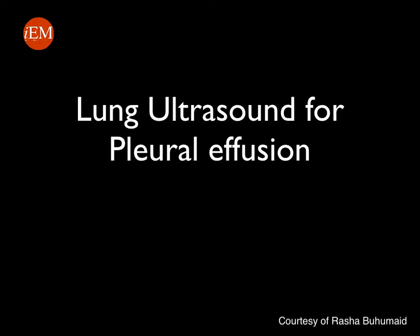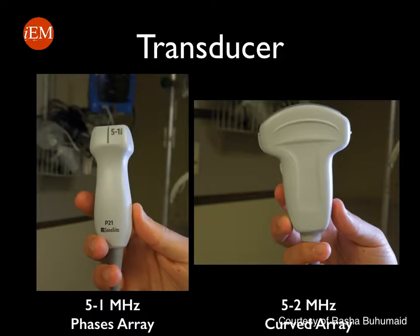In this tutorial we will be reviewing lung ultrasound to evaluate for pleural effusion. You will be using either the cardiac or phased array probe or the curved or abdominal probe to perform this study.